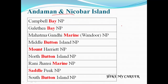B means Bay and Button. The parks are Campbell Bay National Park, Galathea Bay National Park. And Button means Middle Button Island National Park, North Button Island National Park, and South Button Island National Park.